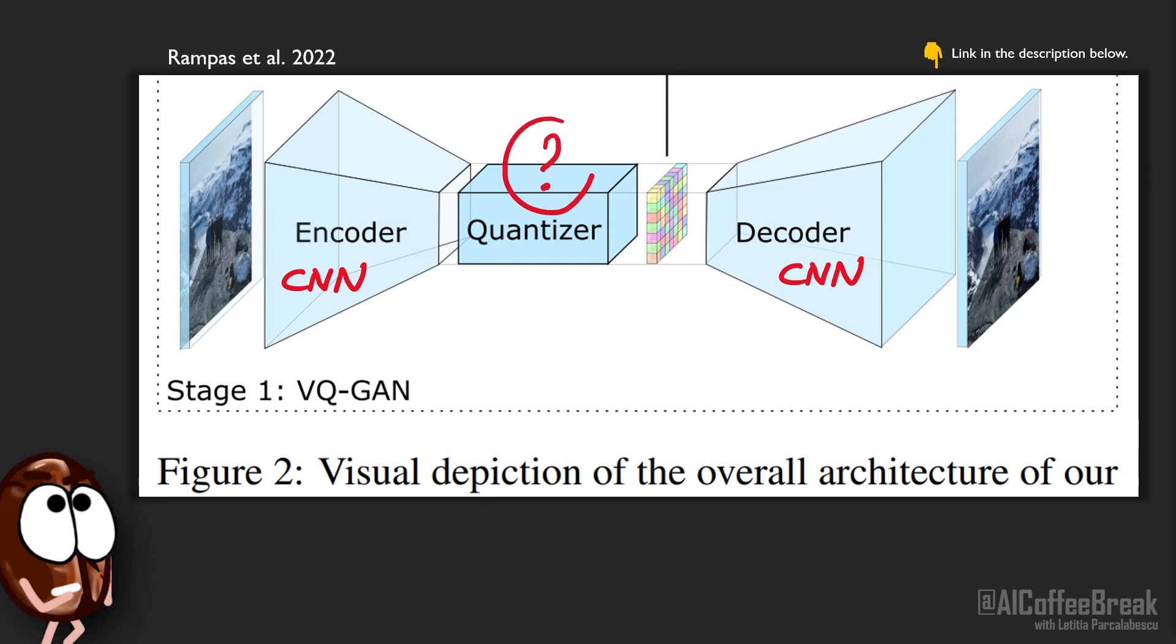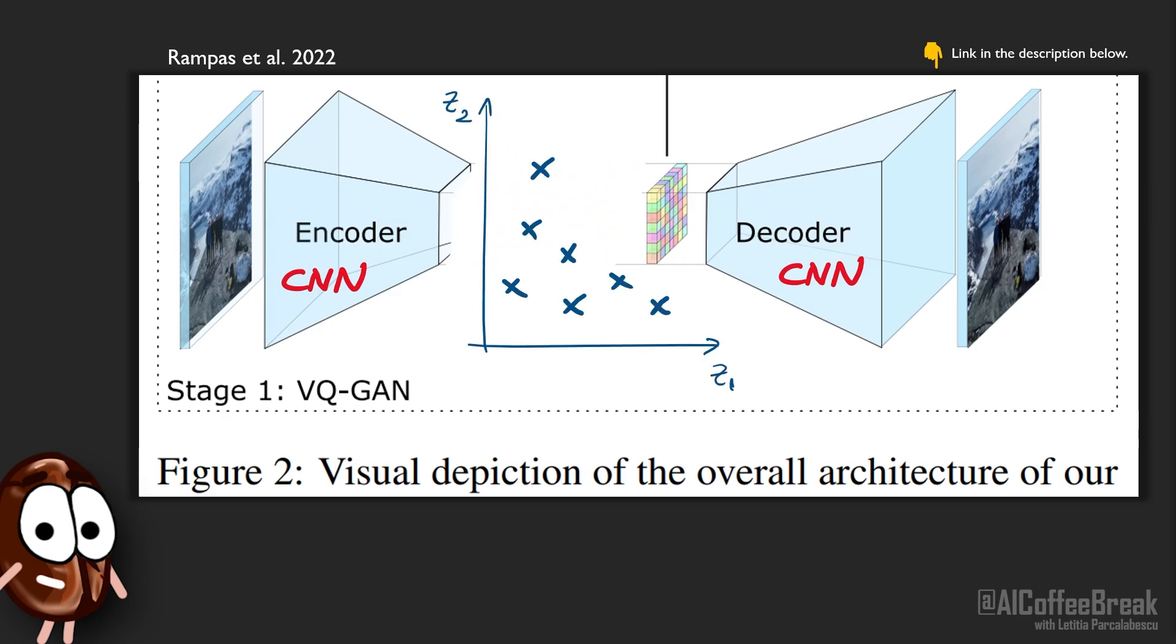Now, what about the quantization part? Well, without quantization, the latent representation of images would be dense, and all possible representations are allowed as long as they are vectors in this lower dimensional space. In this example, our latent space is two-dimensional, and the X's stand for a different image. But the VQGAN says, no, let's not learn any embedding, let's just map everything to a learned codebook of a given size.